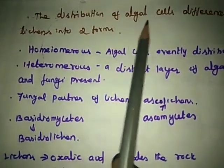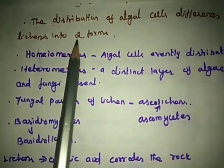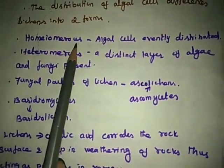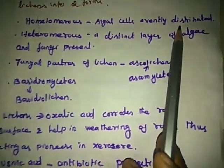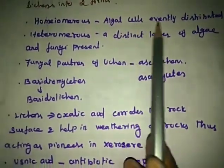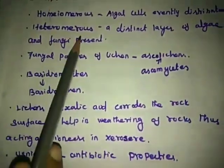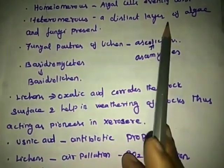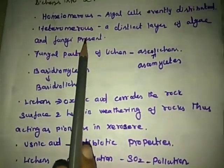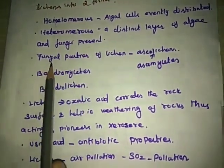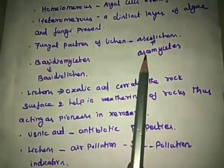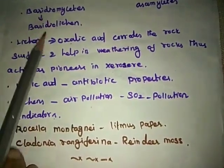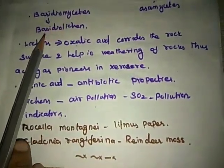The distribution of algal cells divides lichens into two forms: homoiomerous — where algal cells are evenly distributed in the thallus — and heteromerous — where distinct layers of algae and fungi are present. If the fungal partner of the lichen belongs to Basidiomycetes, it is called a basidiolichen.